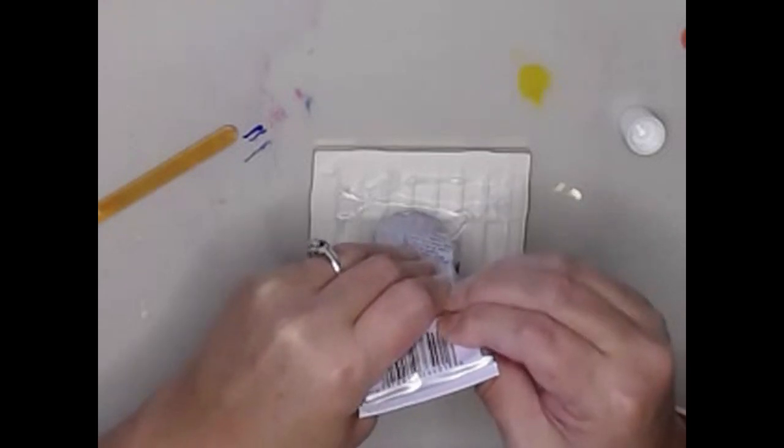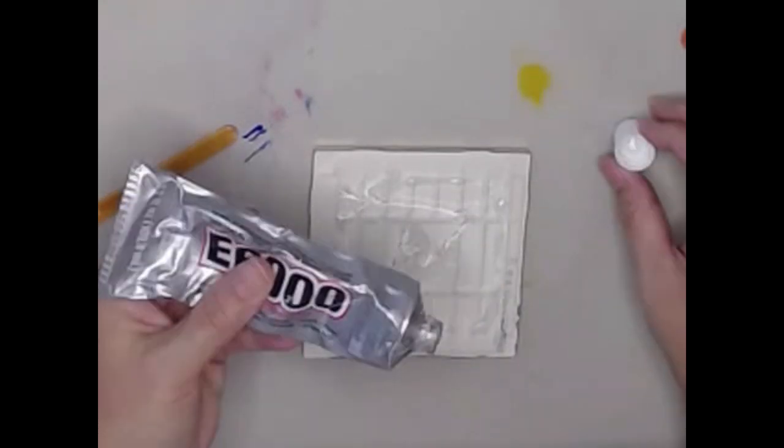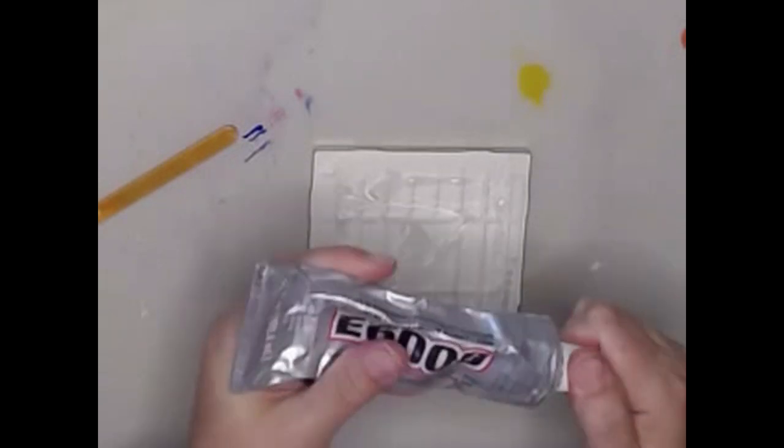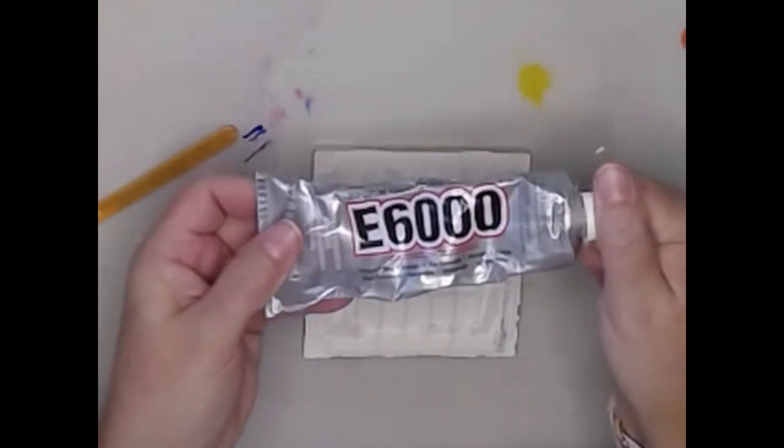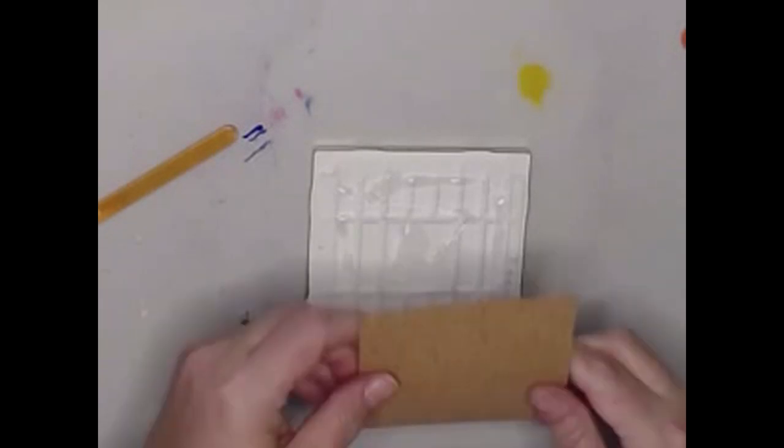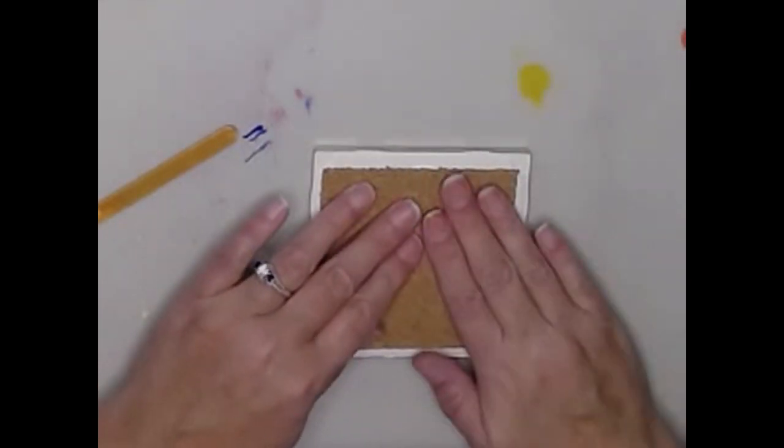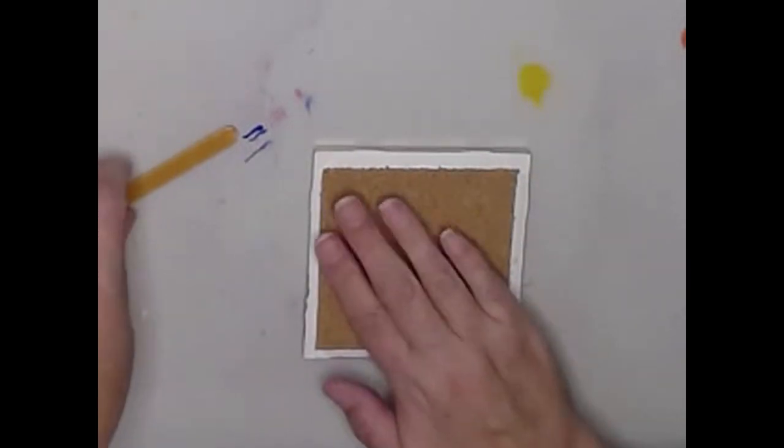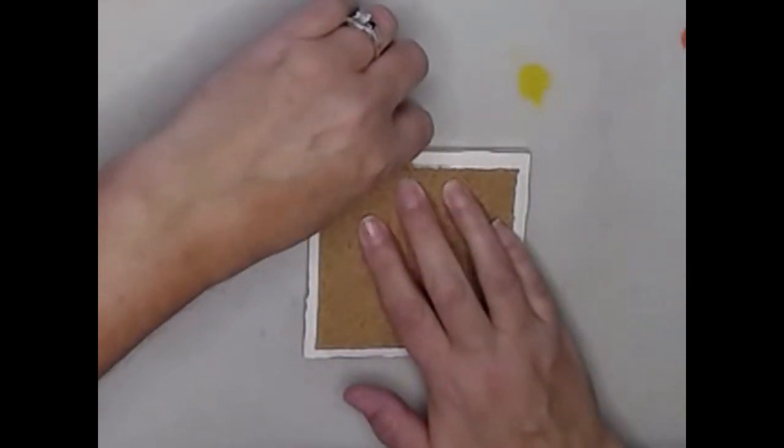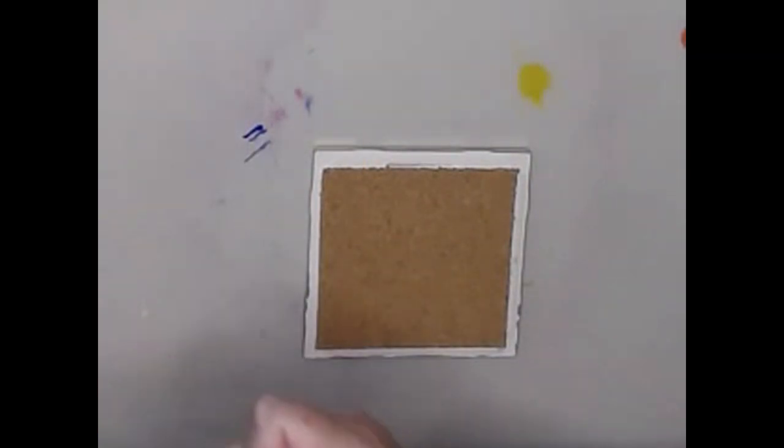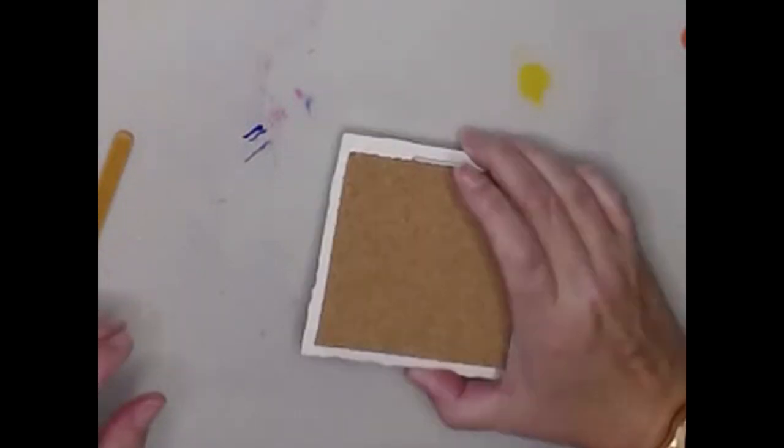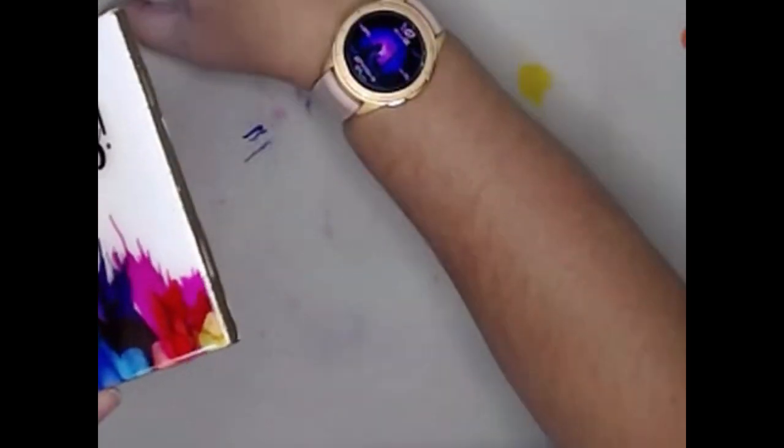Now for the last step on these coasters, I'm using E6000 and putting a liberal amount on the bottom of the coaster. Then I am going to glue on some cork backing, and this is to protect the table from the coasters so that it doesn't mar any of the surfaces you set it on. And I'm using a popsicle stick just to scrape off any of the extra E6000 that seeped out from underneath. I'm going to set these aside for a couple hours to dry, and then they are done.